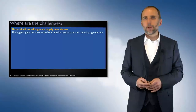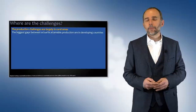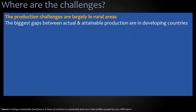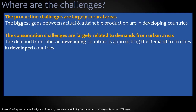So where are the challenges in closing this gap? The production challenges are largely in rural areas — the biggest gaps between actual and attainable production are still in developing countries, and that's where we have the most to gain. The consumption challenges are largely related to demands from urban areas, and because of rapid urbanization and growth, the demand from cities in developing countries is approaching the demand we already see in developed countries.